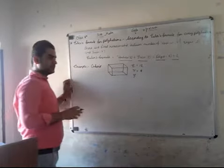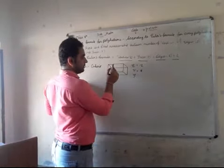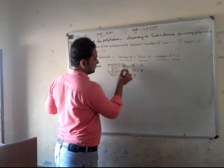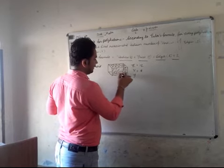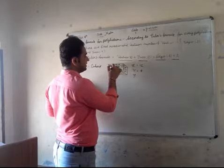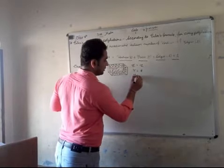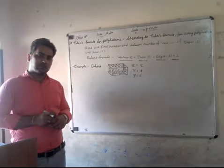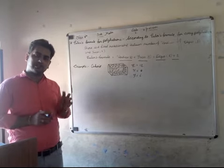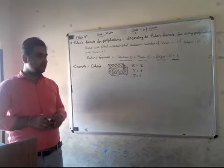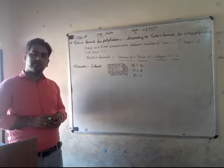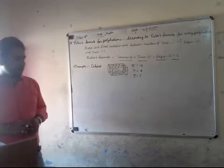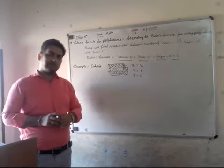This area covers the faces. If you look at the faces of the cube, counting them: 1, 2, 3, 4, 5, 6 — so the total number of faces is 6.